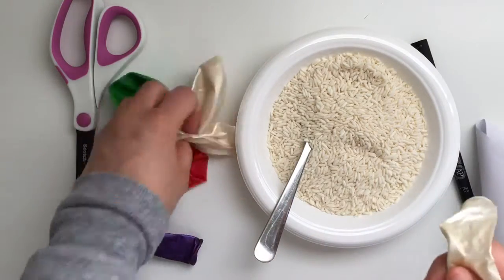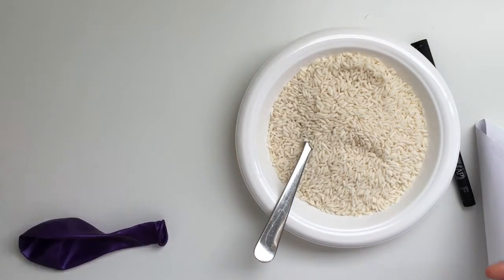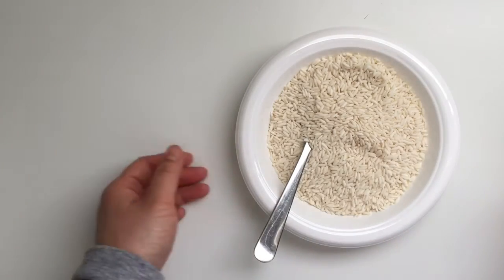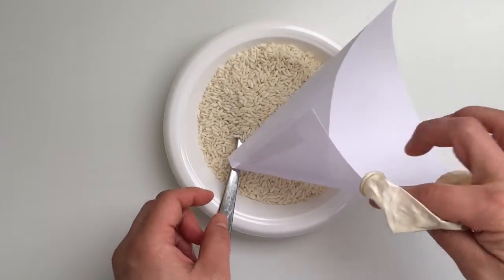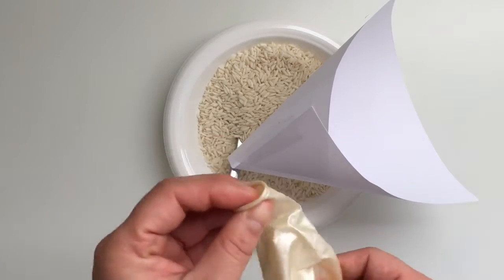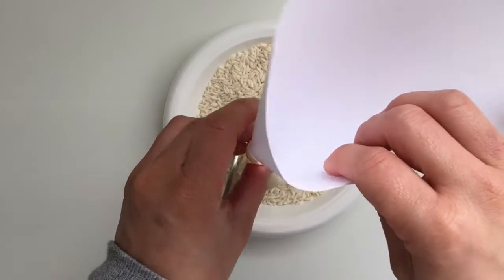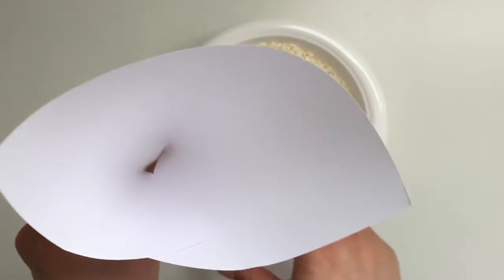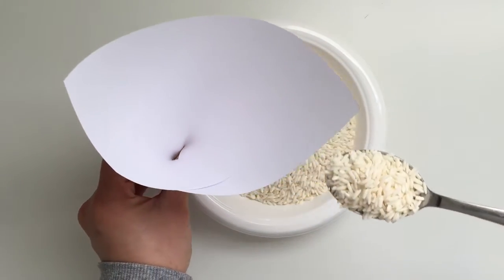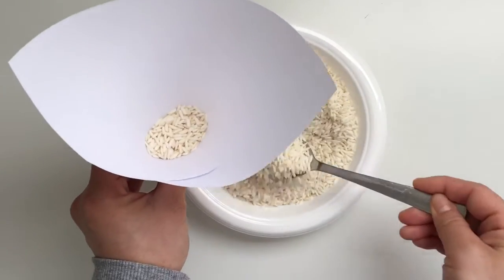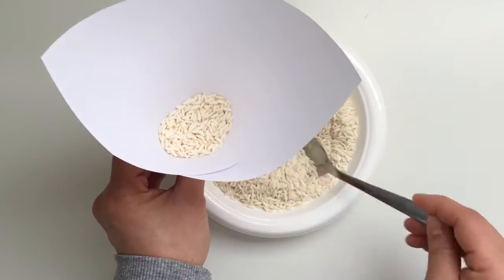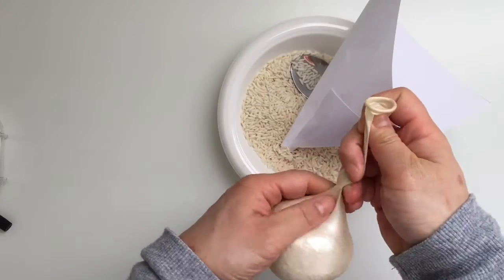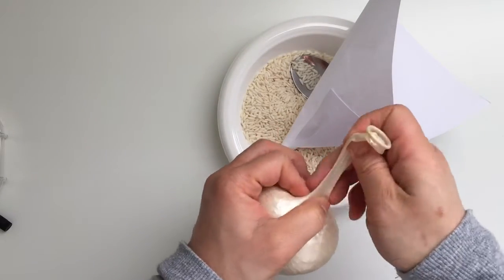Let's clear up some space and let's start putting some rice into our balloon. Let's position this in a way where the rice will fall into the balloon. Now this bit here can get a little bit messy, so just make sure you be careful. Slowly put some rice into the funnel and just let it drop into our balloon.